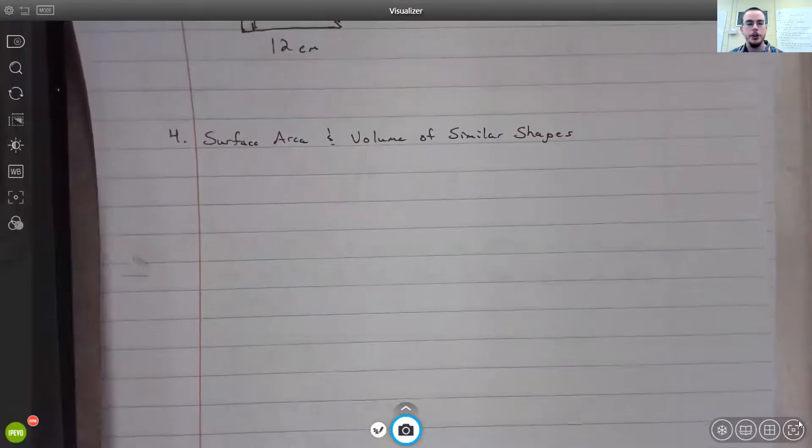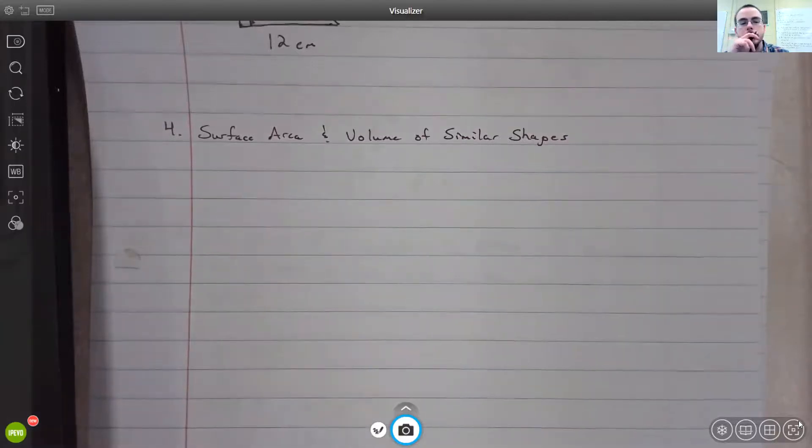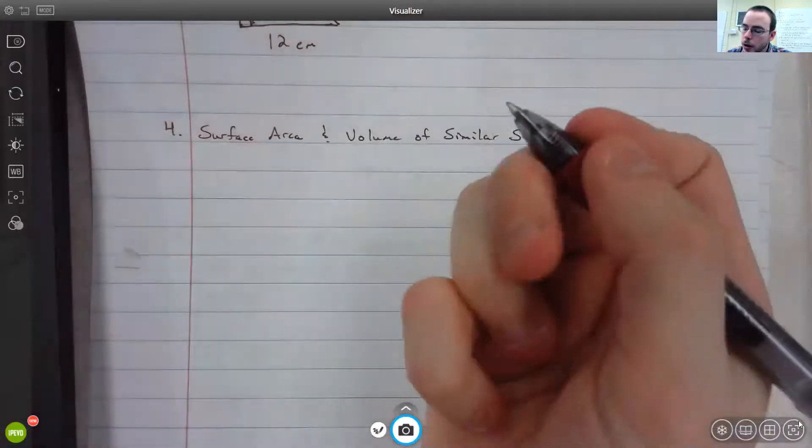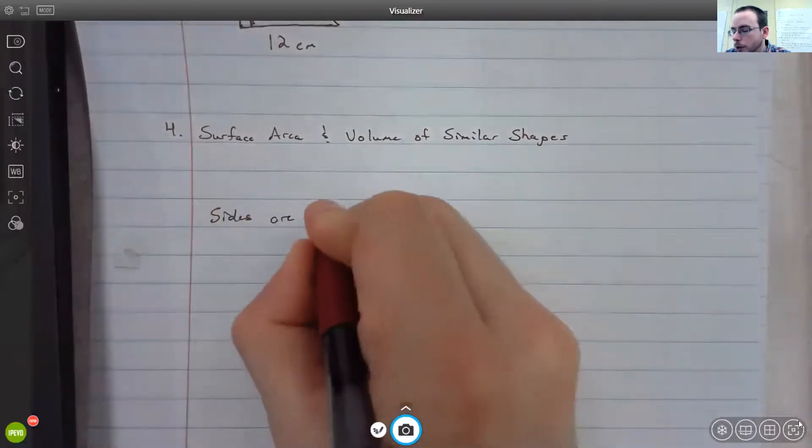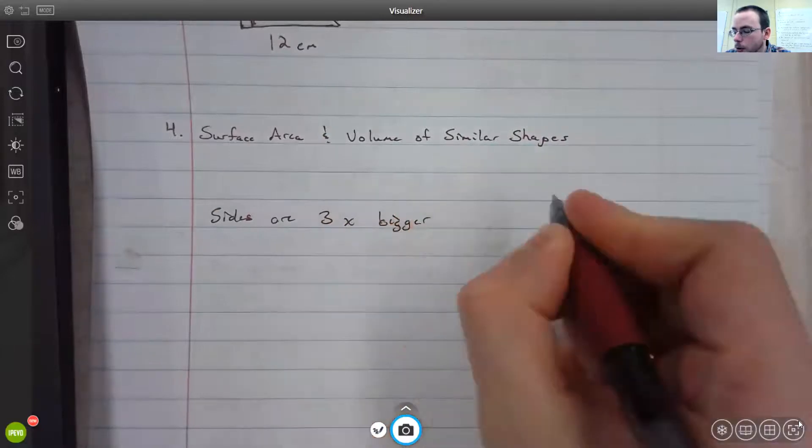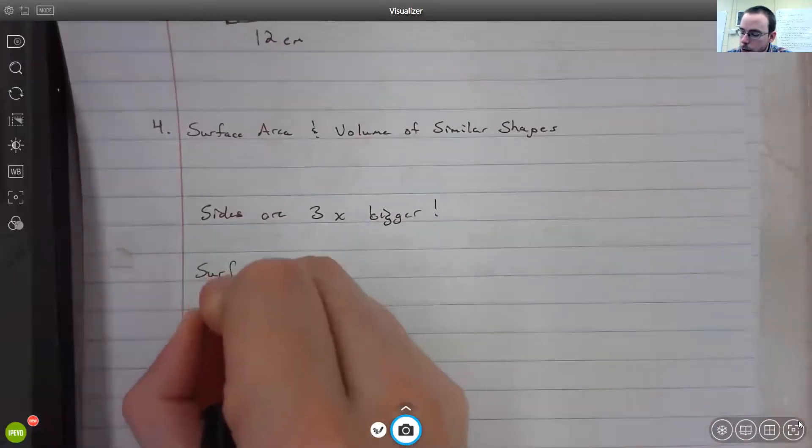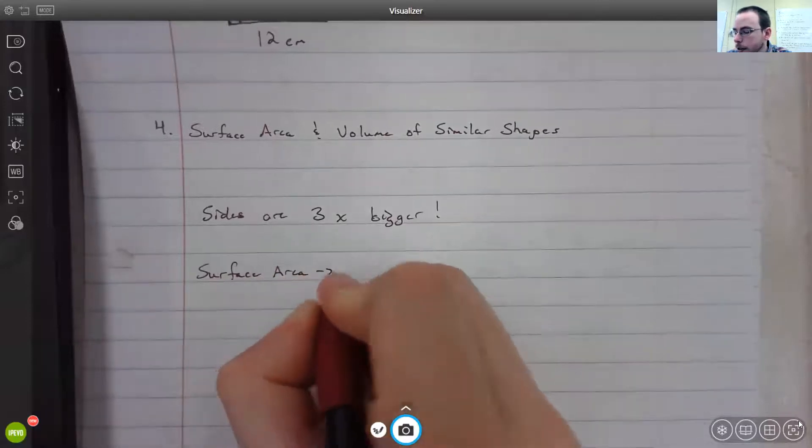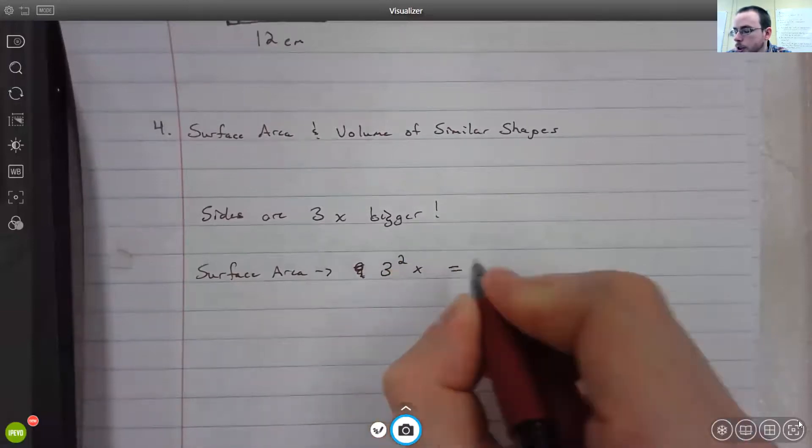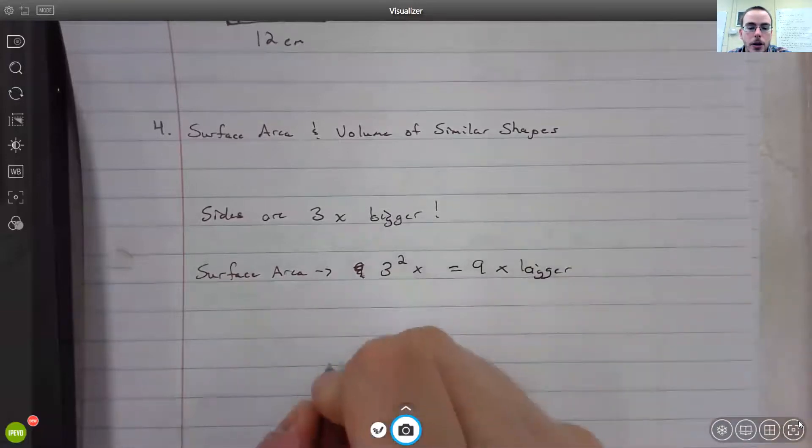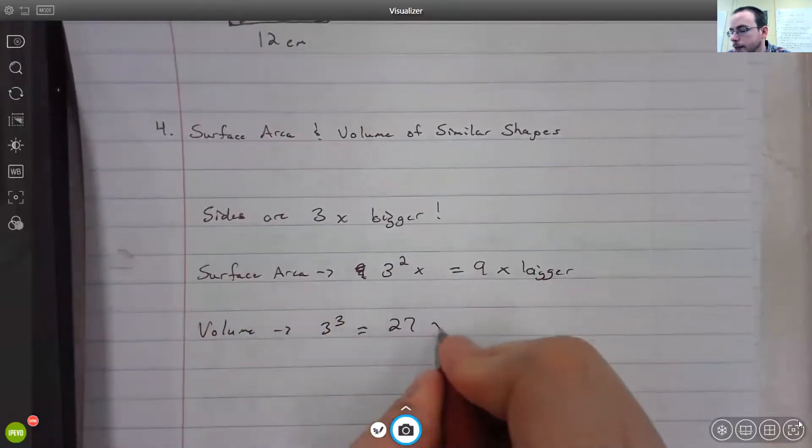And then finally, your surface area and volume of similar shapes. We've covered this before. But let's say that you had your ratio of your sides, your sides are 3 times bigger than your smaller ones. If you did your surface area, surface areas are in squared units, so you would say that you would have 3² times bigger, which is equal to 9 times bigger. And volume would be 3³ bigger, which is 27 times bigger.